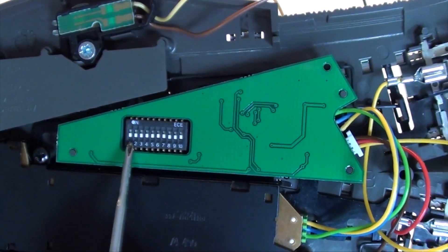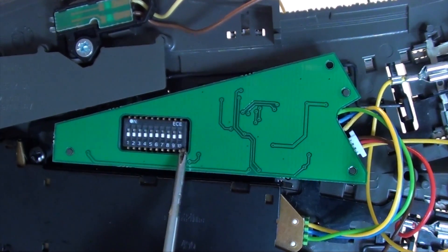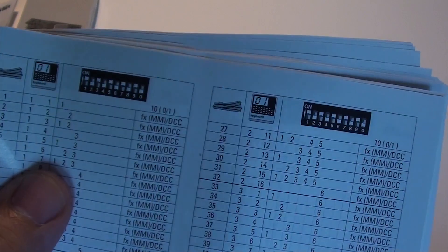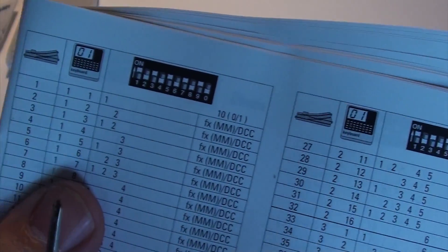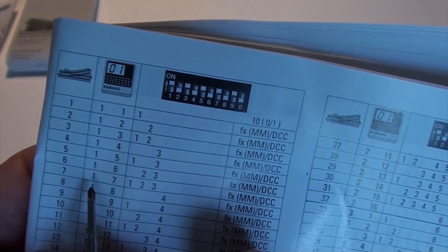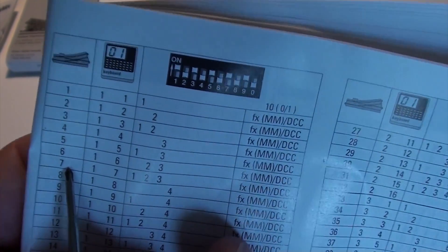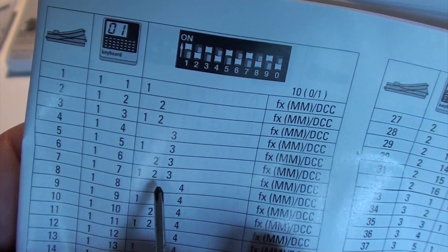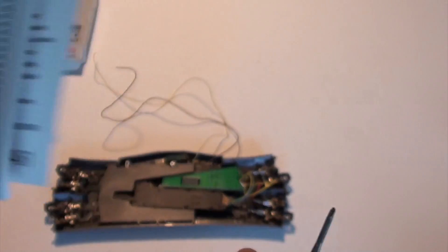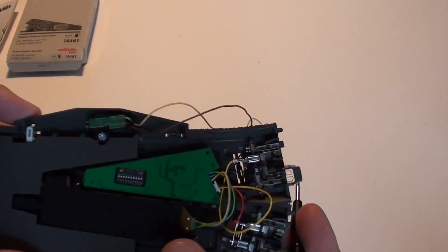Now it is time to set the address of the decoder. We'll grab the instruction booklet and look at the possible addresses. For this I'll use address number seven. And as you can see here on the list, we need to turn switches one, two and three to the on position.